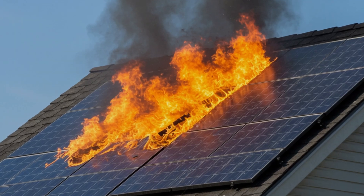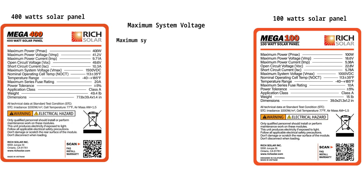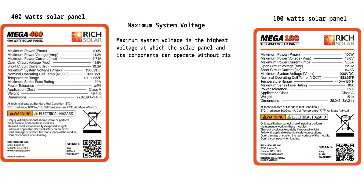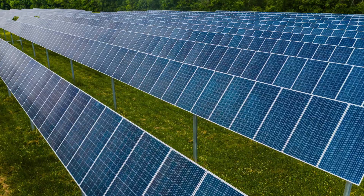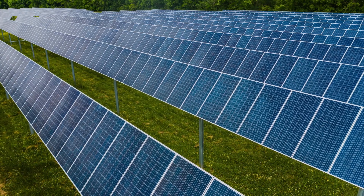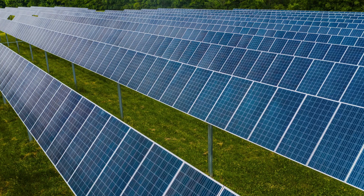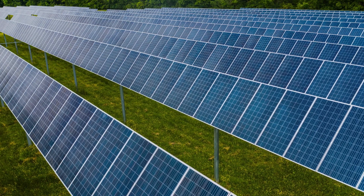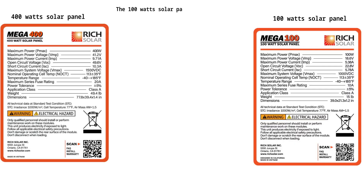6. Maximum system voltage is the highest voltage at which the solar panel and its components can operate without risk of damage, electrical failure, or safety hazards. Designing solar components within this range will help avoid damage. Its role in the solar setup design is that it shows the maximum number of panels that should be connected in a single series array. Looking at the 100-watt solar panel, it has a maximum system voltage of 1000 VDC.